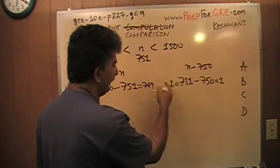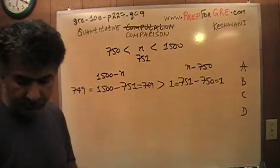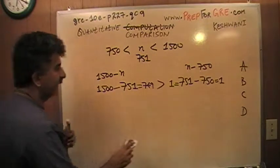As you can see, 749 is more than 1. This quantity in column A is bigger. So what does that tell me?